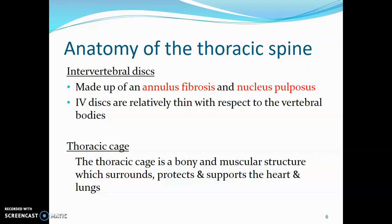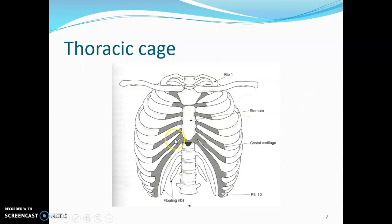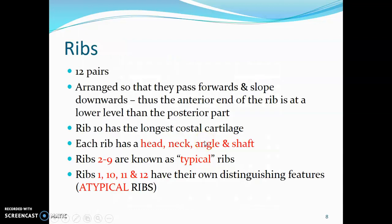Generally the thoracic cage is bony. You have the vertebra and the ribs as well as muscles in between the ribs, and this thoracic cage surrounds, protects, and supports the organs within the thorax — the heart and the lungs. It's made up of the vertebra at the midline posteriorly, the sternum at the midline anteriorly, and the ribs that insert on the sternum through the costal cartilages. We have 12 pairs of ribs, arranged so that they pass forwards and slope downwards, so the anterior ends of ribs are lower than the posterior part.